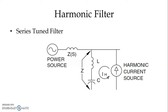The series tuned filter is designed in such a way that at a certain frequency the impedance of the filter is at its lowest, and the impedance of the power source is quite high compared to the impedance of the filter. That is why the harmonic current, instead of propagating to the power source and other connected equipment, will circulate between the current source and the series tuned filter.